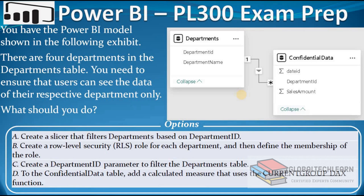Under options, we have four options. The first option is to create a slicer that filters departments based on Department ID. This means we can add a slicer on the report on the department field and the user can filter on the department. But this option will not work for the given case, as the user can select multiple departments or a different department than their own, and with that they can see data from other departments. The second option is to create a Row Level Security role for each department and then define the membership of the role. This option can restrict data for users to their department only, so we will try this option in Power BI Desktop.